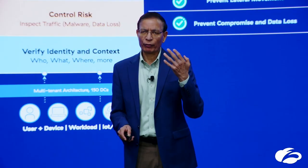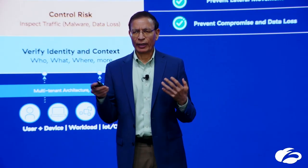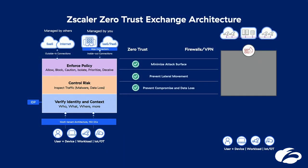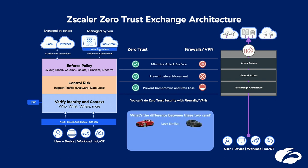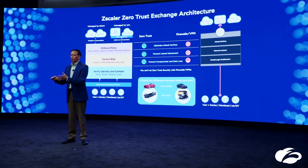This architecture allows us to prevent compromise, prevent lateral movement, and prevent data loss. This architecture is fundamentally different from traditional firewall VPN architecture. A firewall is like a bridge — once you make the connection, things keep flowing, and they can't really do proper inspection of SSL. That's why a proxy-based architecture makes for a wonderful exchange. Sometimes people wonder — when accessing through traditional VPN or firewall versus Zscaler, it looks similar from the outside, like two cars. But once you open the hood, the architecture is very different. It's the architecture that needs to change periodically, and Zscaler has built that clean, new architecture.